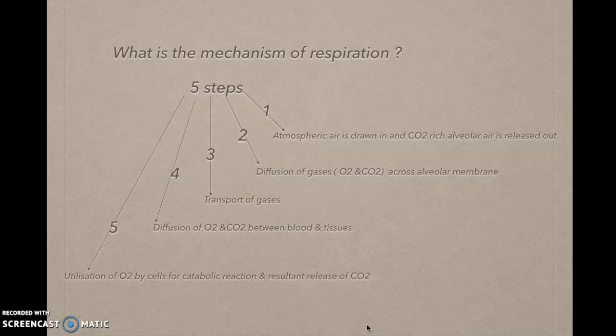The third step is the transport of gases. Oxygen and carbon dioxide are transported by the blood, which is circulated by the heart throughout our body. The fourth step is the diffusion of oxygen and CO2 between blood and tissues. Oxygen and CO2 are diffused further between the blood and tissues when blood from the lungs is carried to the tissues.